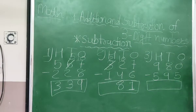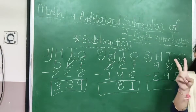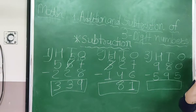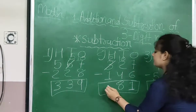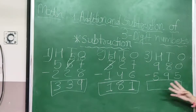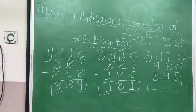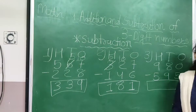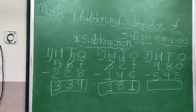Now 2 minus 1. If you have 2 things and take away 1, only 1 is left. So 327 minus 146, our answer is 181.